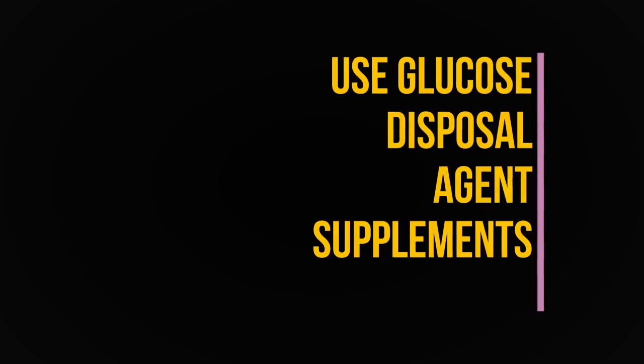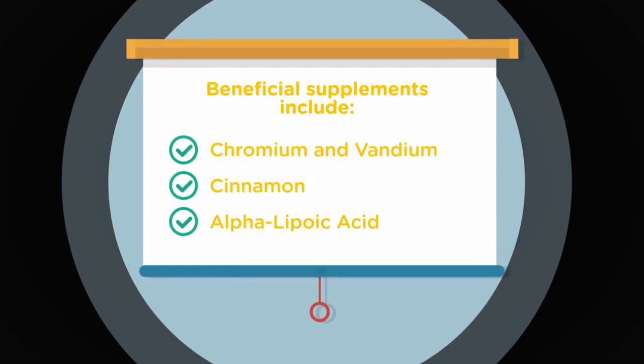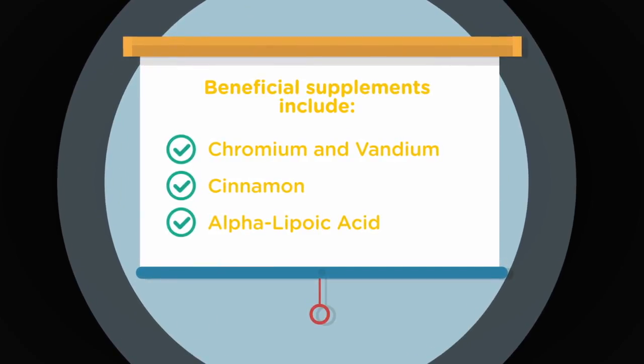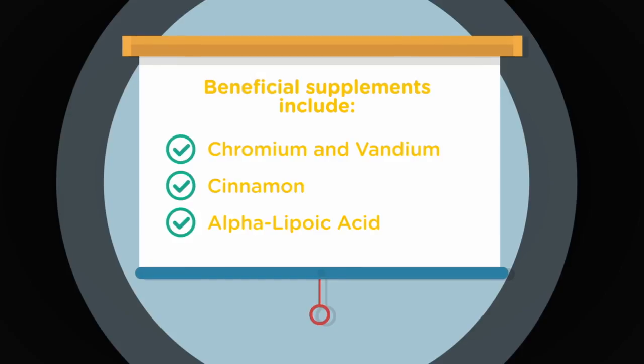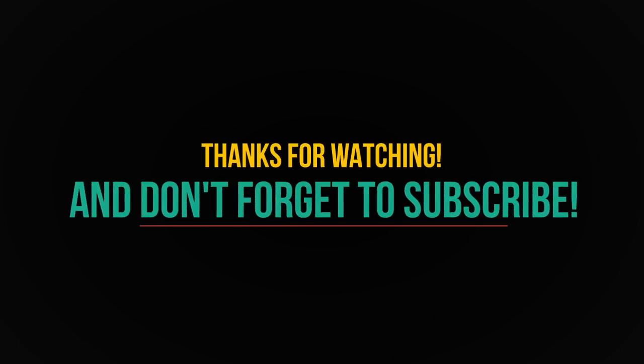Tip number five: use glucose disposal agent supplements. This doesn't apply to everyone—it can be optional, you don't necessarily have to do it—but it definitely helps. These supplements include chromium and vanadium, cinnamon, and alpha-lipoic acid. That's it guys, thanks for watching. Don't forget to hit that subscribe button. Happy New Year's!